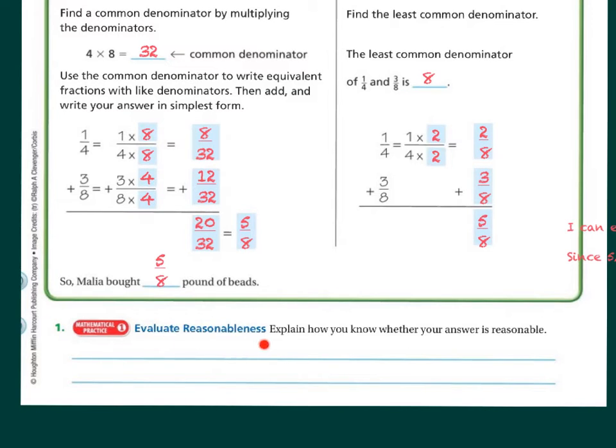Let's evaluate reasonableness. Explain how you know whether your answer is reasonable. Well, I can estimate the sum. 0 plus 1 half is 1 half, and since 5 eighths is close to the estimate of a half, then the answer must be reasonable.